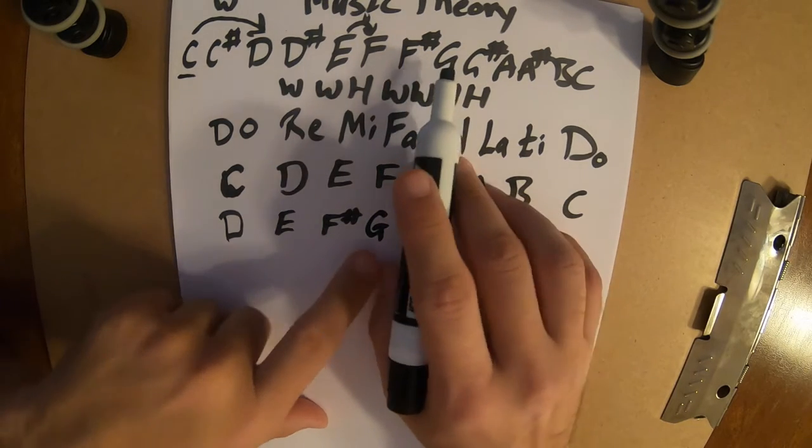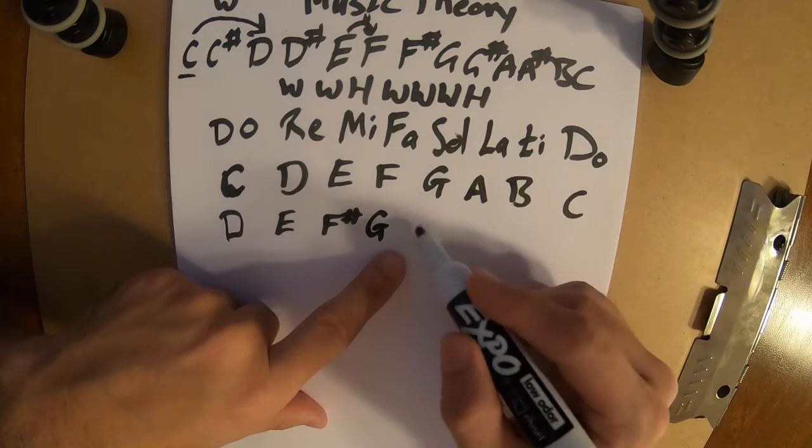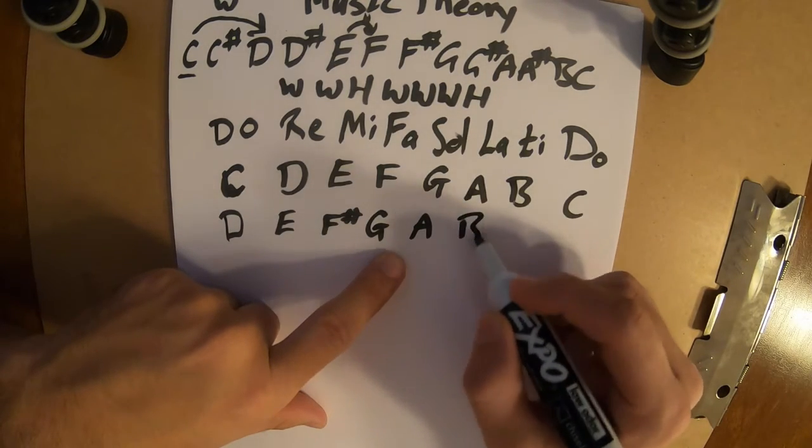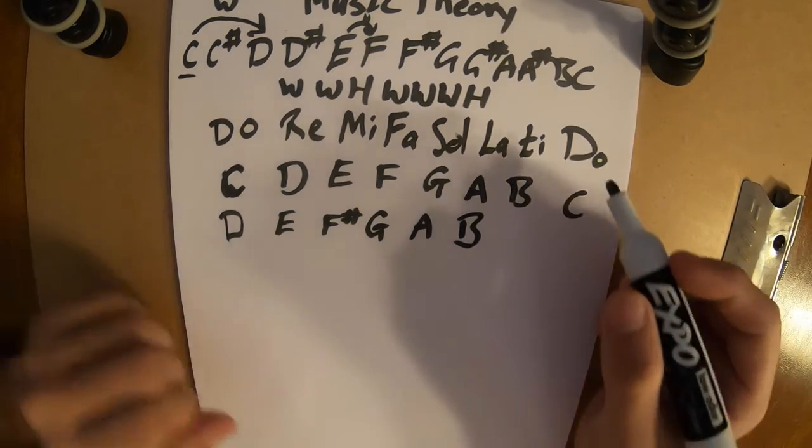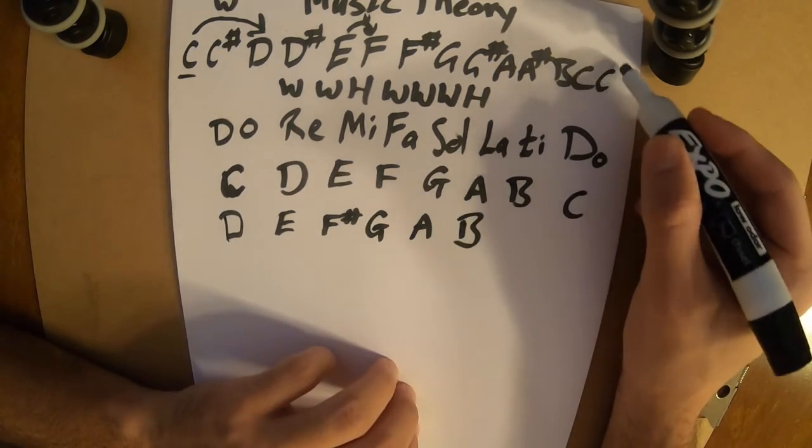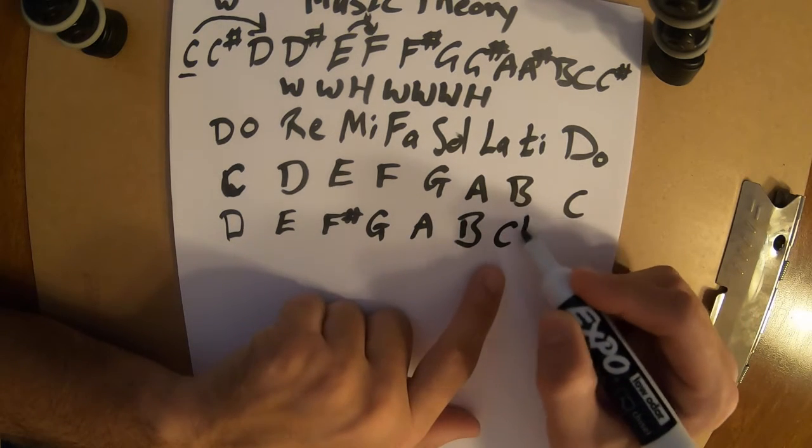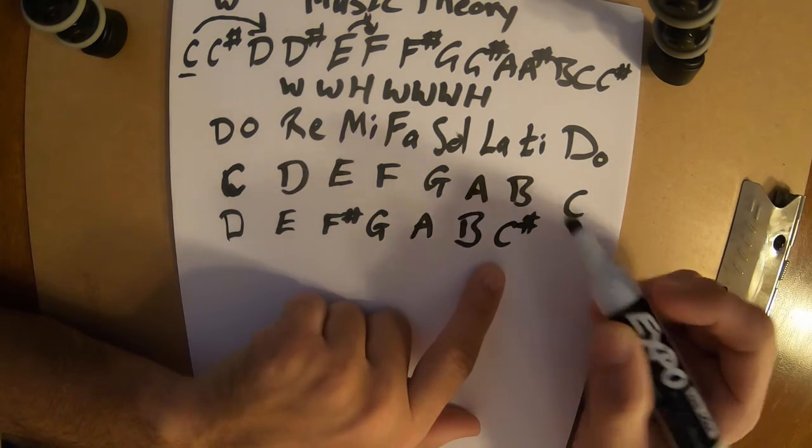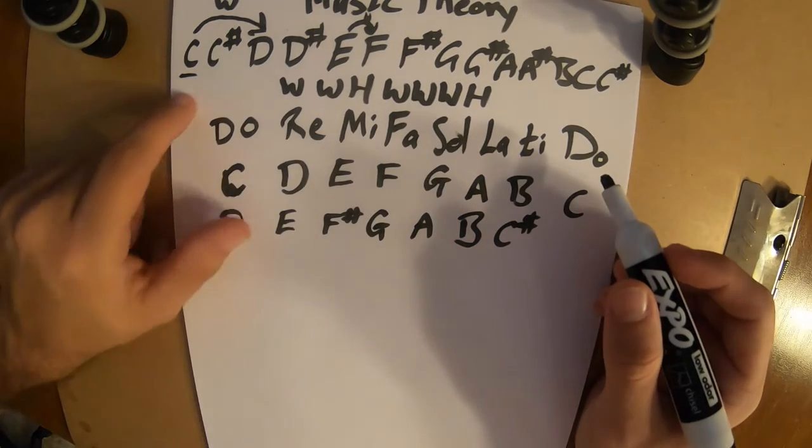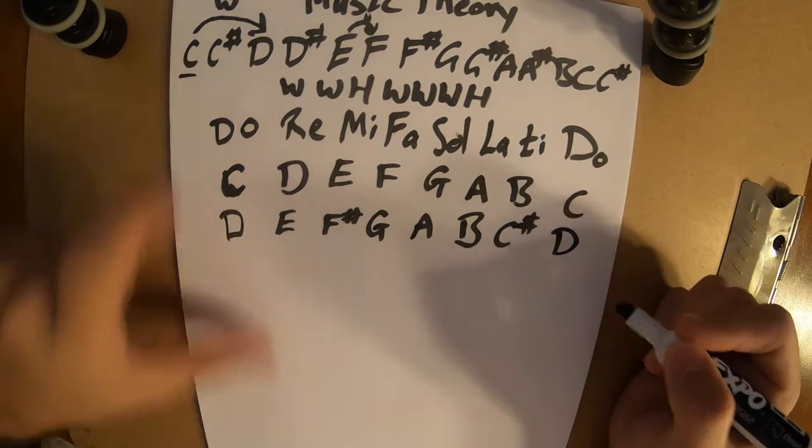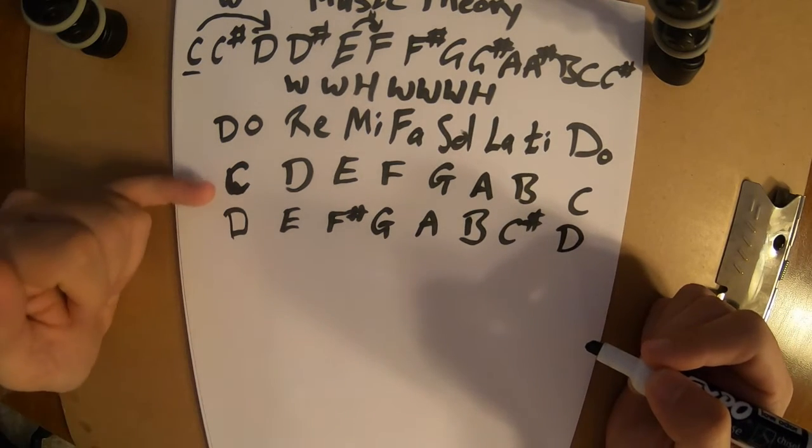From G, we are now back on whole step. So whole step will bring us to A. Next whole step will bring us to B. And then I didn't really write it in here, but this would continue the same direction. So an additional whole step would bring us to C sharp. And then our final half step should land us on D. If we're on C sharp and we do a half step, yep, D.